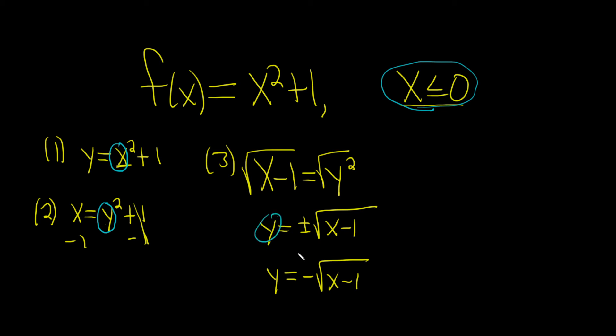The y needs to be negative or 0, so you take the negative. The fourth step is to rename y and call it the inverse function using the proper notation, which is f inverse of x equals negative square root of x minus 1. And that would be the final answer.